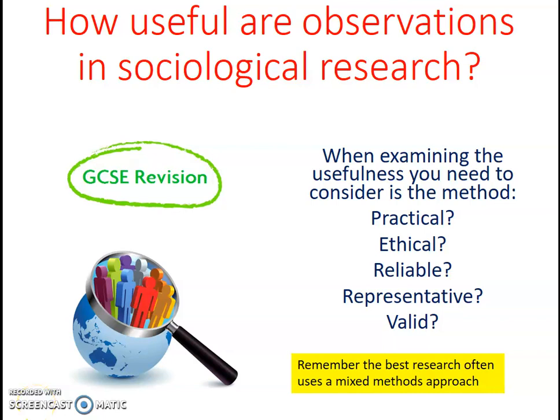In this lecture we're going to be looking at how useful observations are in sociological research. When examining any research method, you need to be able to comment on its usefulness based on how practical it is, how ethical, how reliable, how representative, and how valid it is. I will also talk about mixed methods, because that's one of the solutions to sociological research being perhaps unethical — you might choose an alternative method that is highly ethical to make up for that weakness.